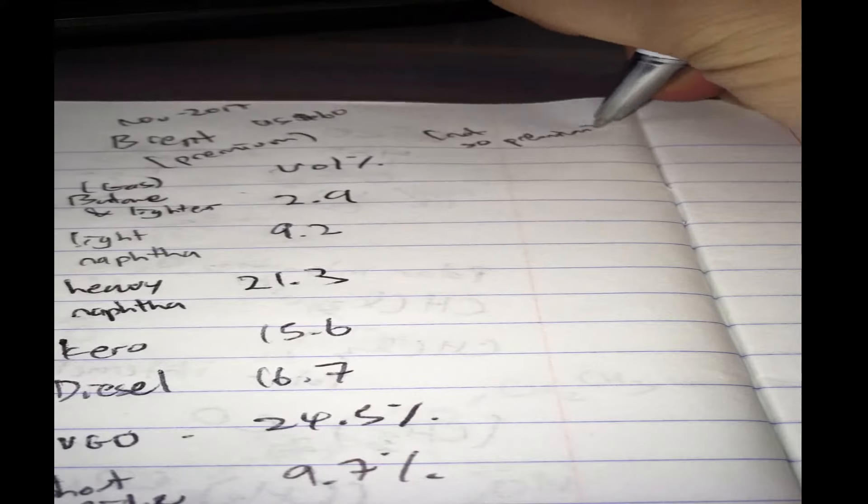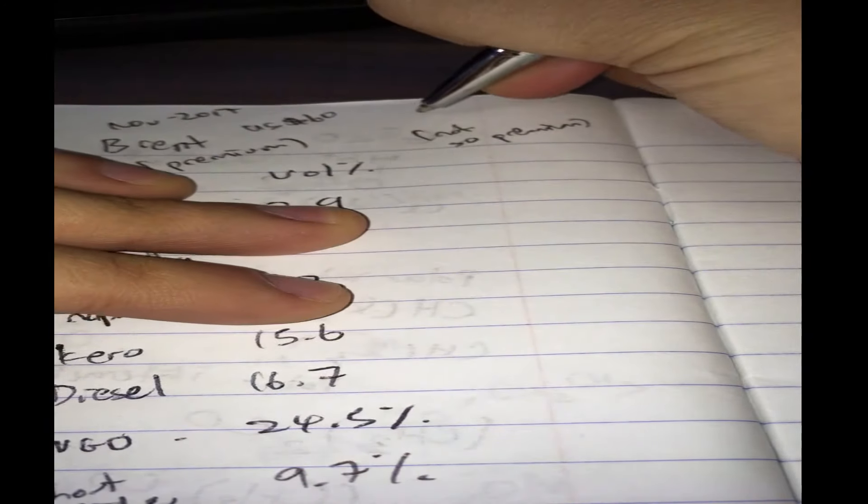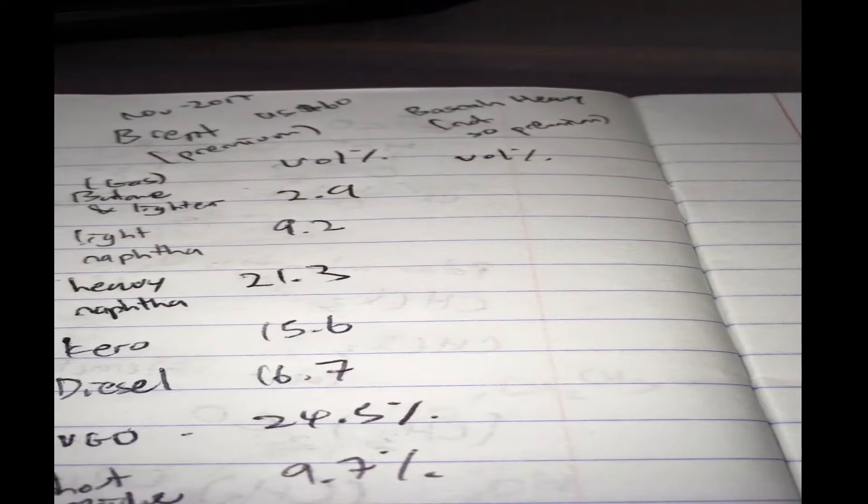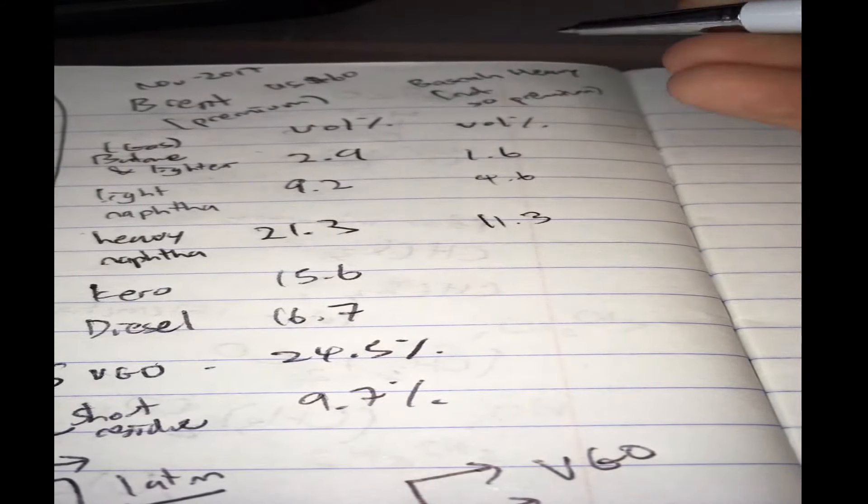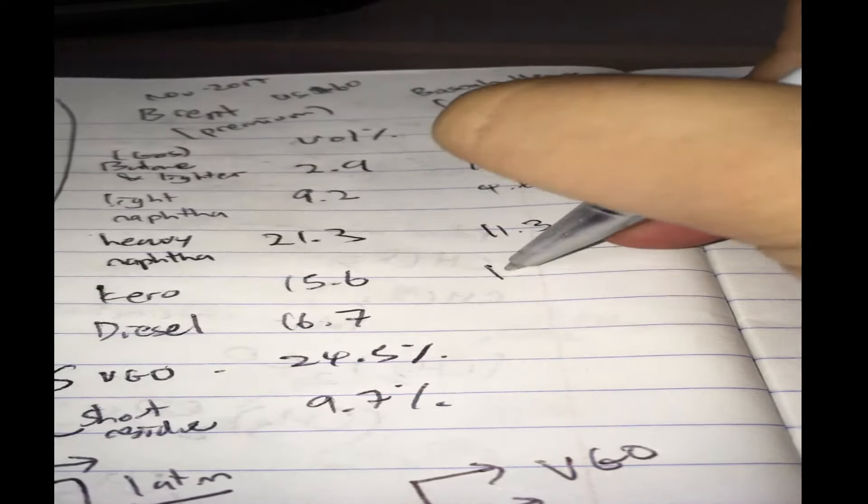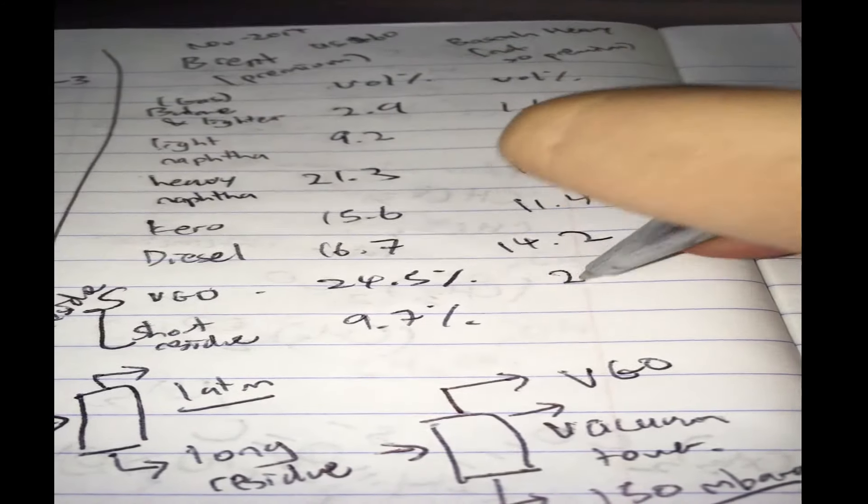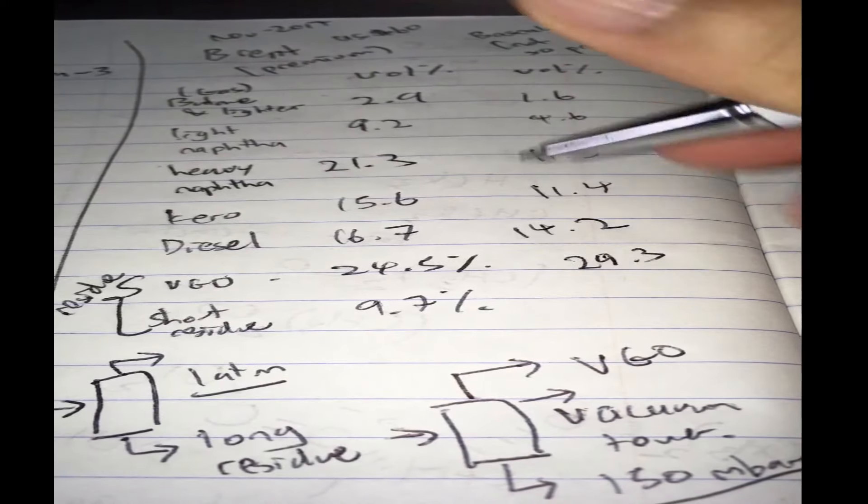What about the not so premium stuff? Now there's a blend they called Basra Heavy. I don't know how to pronounce it properly. If you know, please tell me. So what's the volume distribution like? Butane and lighter, 1.6. Light naphtha, 4.6. Heavy naphtha, 11.3. So you can see your gasoline content is almost half of what a premium crude is. Kerosene, 11.4, not so much. Diesel or gas oil, 14.2. And we come to the long residual stuff, 29.3 for vacuum gas oil.